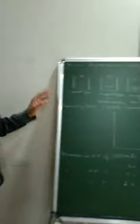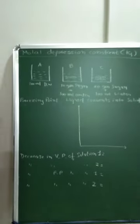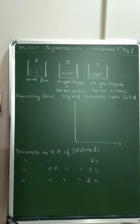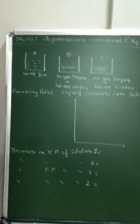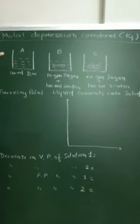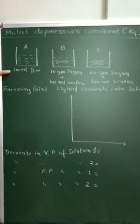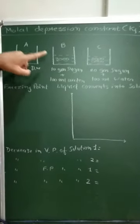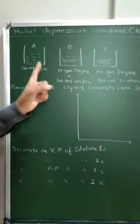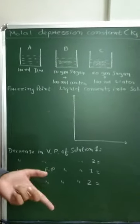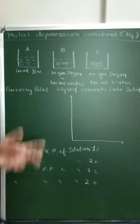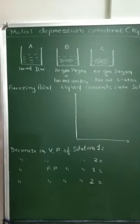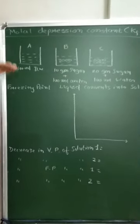Now focus on the board. We have three different types of beakers. In beaker number 1 we have 100 ml of distilled water. In beaker number 2 we have 10 grams of sugar plus 100 ml of water. In beaker C we have 20 grams of sugar plus 100 ml of water.